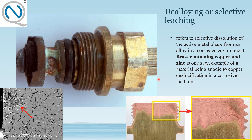Another type is dealloying, also called selective leaching. Whenever you get an example involving brass containing copper and zinc, or two different metals in an alloy, it might lead your answer to dealloying or selective leaching. It refers to the selective dissolution of the active metal phase from an alloy in a corrosive environment. Brass containing copper and zinc is one such example, with copper dezincification in a corrosive medium being a classic case.